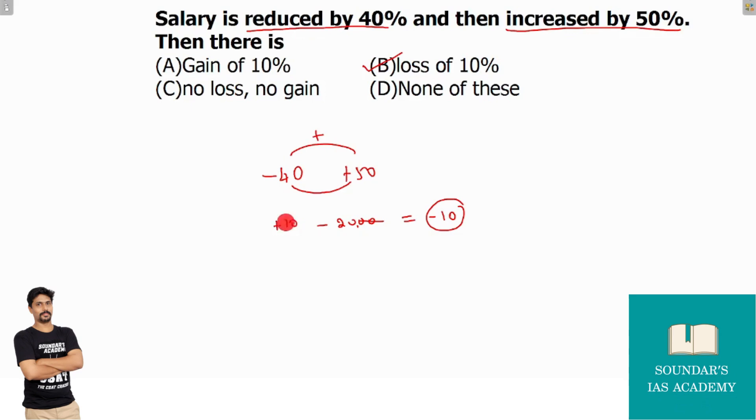Add the two numbers. Multiply the two digits. Which is step 2. That's why plus 10 minus 20 equals minus 10. So, there's a 10% loss.